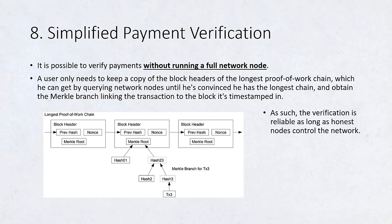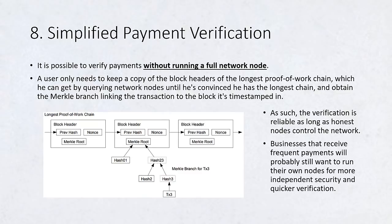The verification is reliable as long as honest nodes control the network, but is more vulnerable if the network is overpowered by an attacker. While network nodes can verify transactions for themselves, the simplified method can be fooled by an attacker's fabricated transactions for as long as the attacker can continue to overpower the network. One strategy to protect against this would be to accept alerts from network nodes when they detect an invalid block, prompting the user's software to download the full block and alerted transactions to confirm the inconsistency. Businesses that receive frequent payments will probably still want to run their own nodes for more independent security and quicker verification.